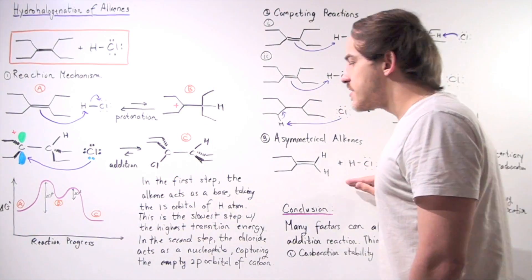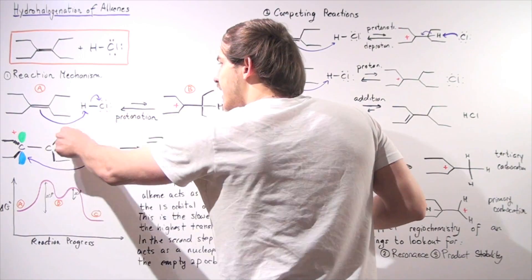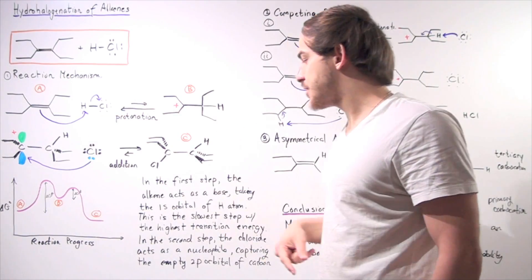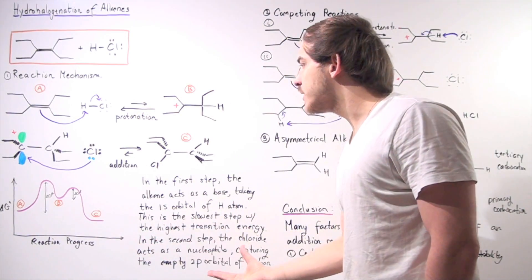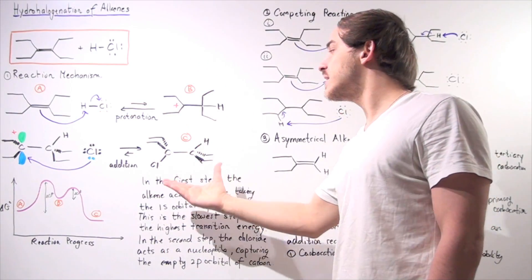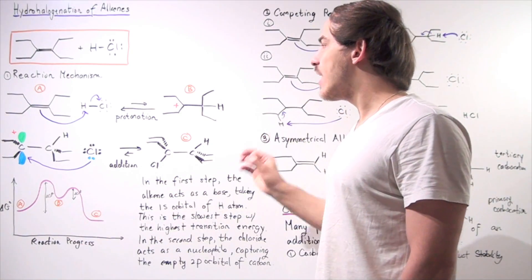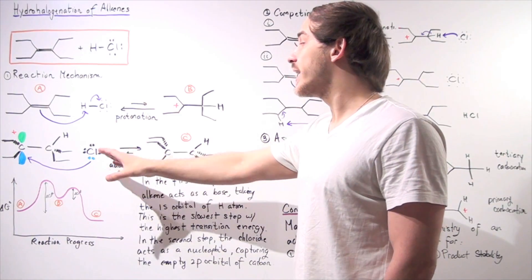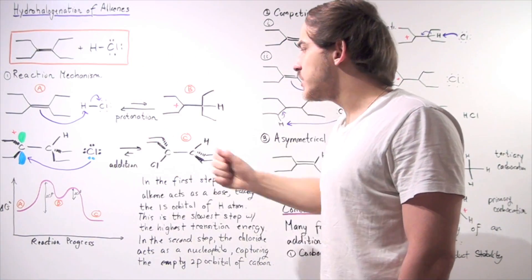In the first step, the alkene acts as a base, with the pi bond taking away the H atom. This is the slowest step because it has the highest transition state. In the second step — the addition step — the chloride acts as a nucleophile, using its pair of electrons to capture the empty 2p orbital of this carbon, forming our final product. We go from an alkene to an alkane. The first step is our protonation step — it's the rate-determining step. The second step is the quick addition of the halide. It could be any halogen, such as bromine.